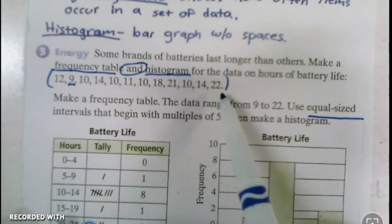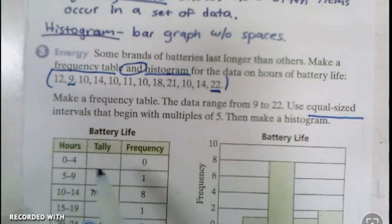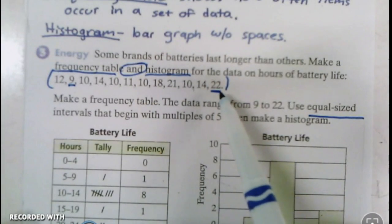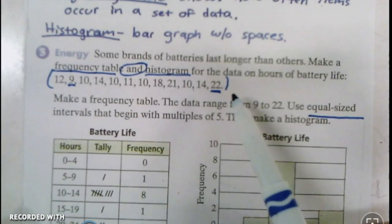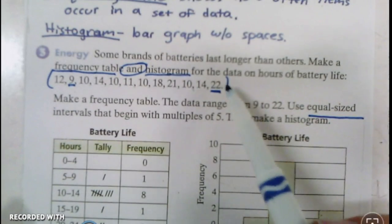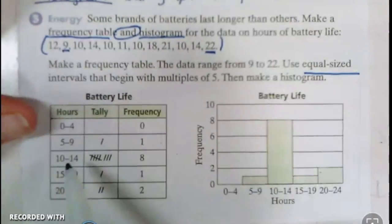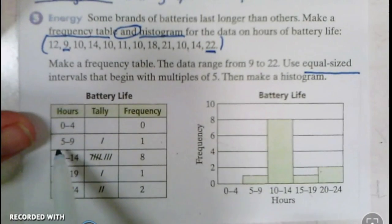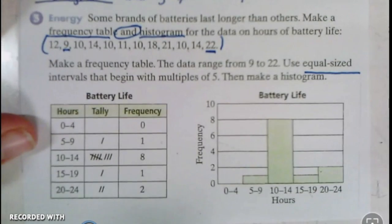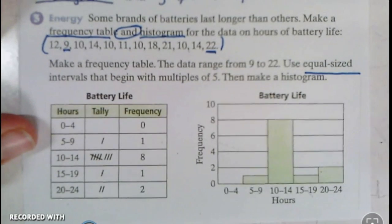Our biggest number looks like it's 22, so we need to go up to 22. We're going to begin with five. So we've got 5 to 9, 10 to 14, 15 to 19, 20 to 24, and then 0 to 4 below that to make sure that we incorporate it equally with equal intervals.